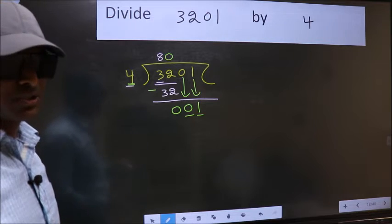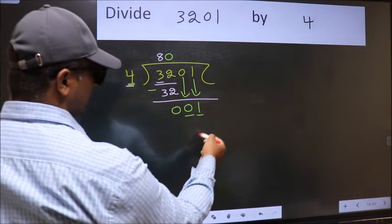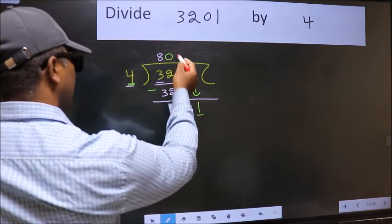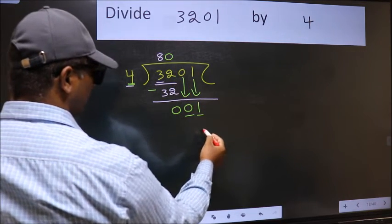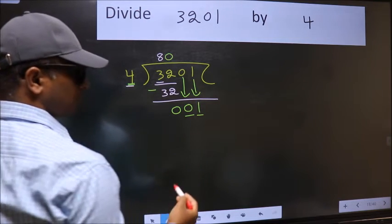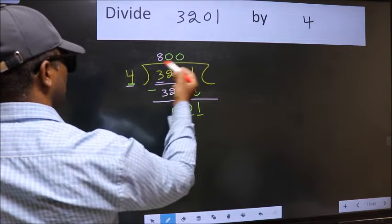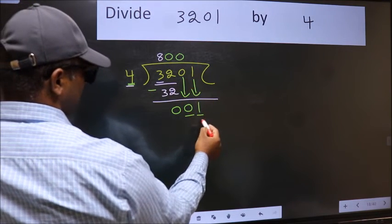Instead, what you should think of doing is, which number should we take here? If I take 1, we will get 4. But 4 is larger than 1. So, what we should do is, we should take 0. So, 4 into 0, 0.